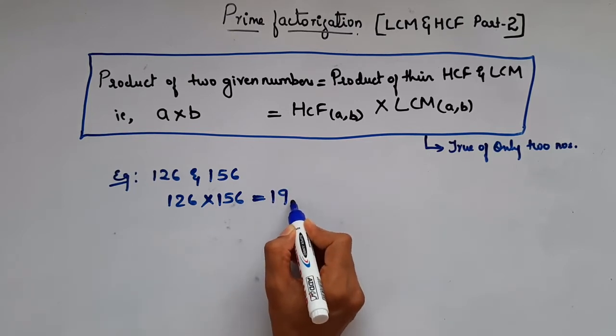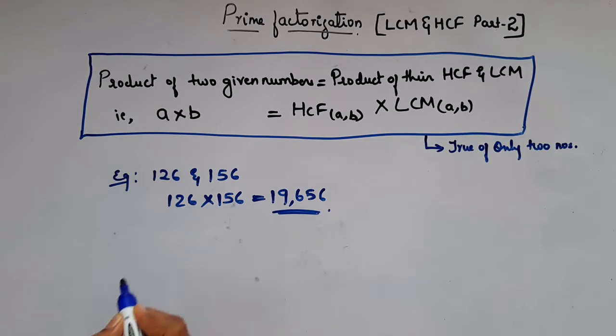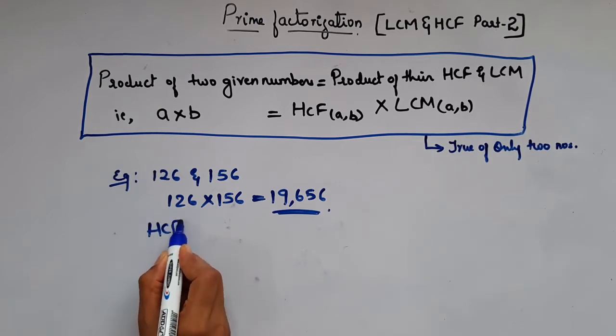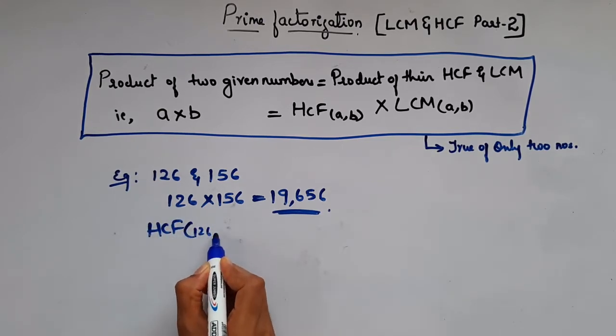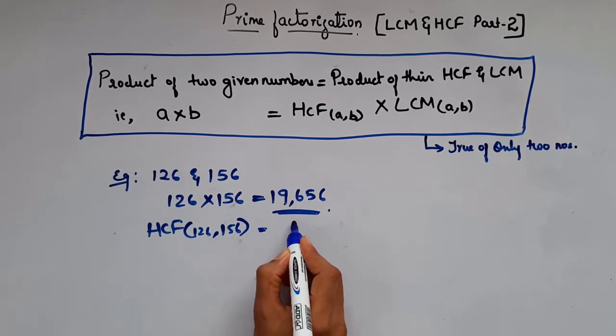Now HCF of these two numbers, that is 126 and 156, is 6. This you can do by prime factorization.